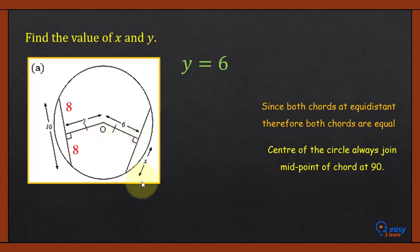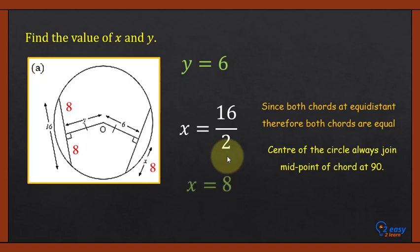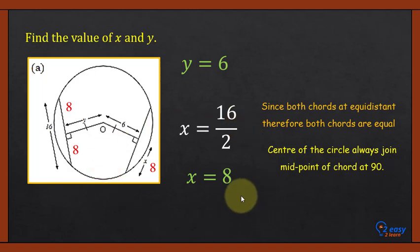Using both properties — equal chords and the midpoint — we can find x. Since x is half of 16, x equals 16 divided by 2, so the value of x is 8. Students should observe the properties carefully, as sometimes more than two properties are applied in one question.